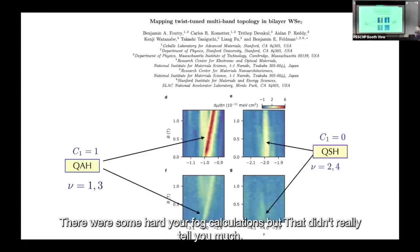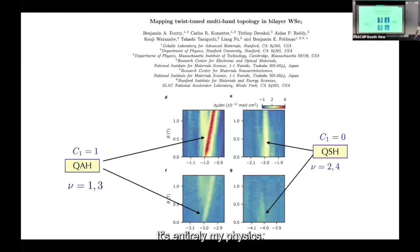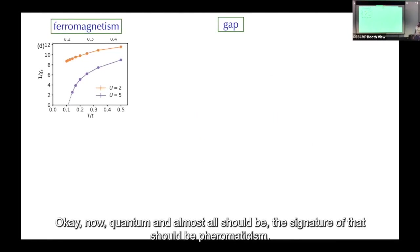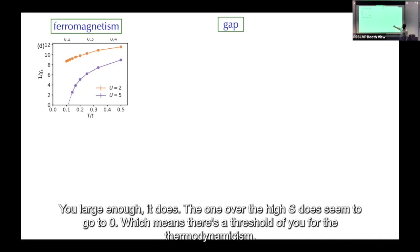This is strongly coupled physics, entirely interaction-induced, arising from the lifting of spin degeneracy between doubly and singly occupied states — it's entirely Mott physics. The signature of quantum anomalous Hall should be ferromagnetism: the spin susceptibility at small U doesn't seem to diverge, but at large enough U it does — χ_s^{-1} goes to zero — indicating a threshold in U for the ferromagnetic state occurring spontaneously, not put in by hand.